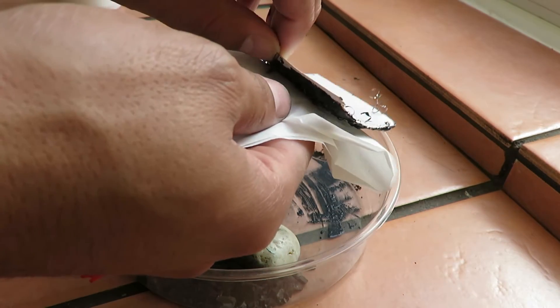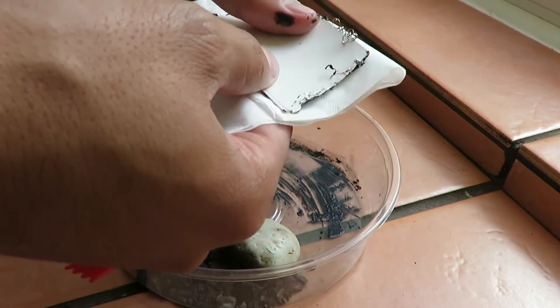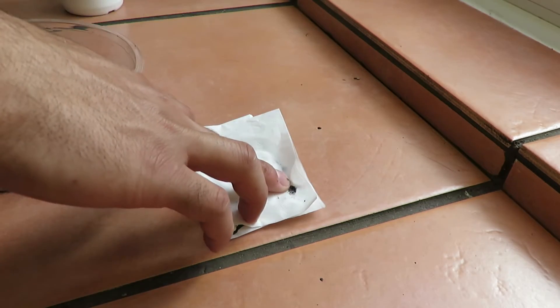Squeeze the carbon between the tissue and the cardboard. Put a little bit of pressure on it and leave it to dry.